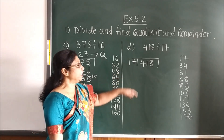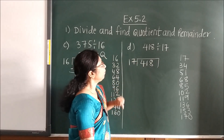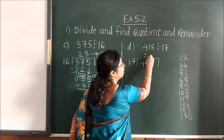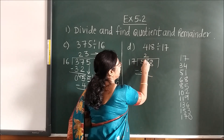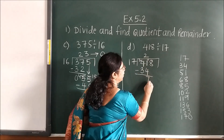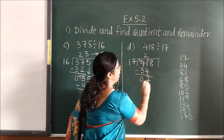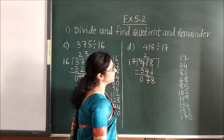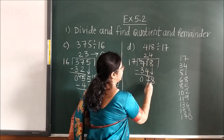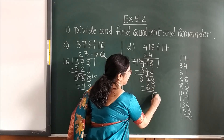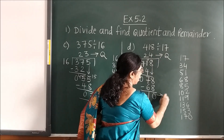Same for the table of 17. Less than 45: 17 twos are 34. Subtract — you get 7. Bring the next number down — 78. Less than 78: 17 fours are 68. So here quotient digits are 0 and 1 and your remainder — this is your quotient and this is your remainder.